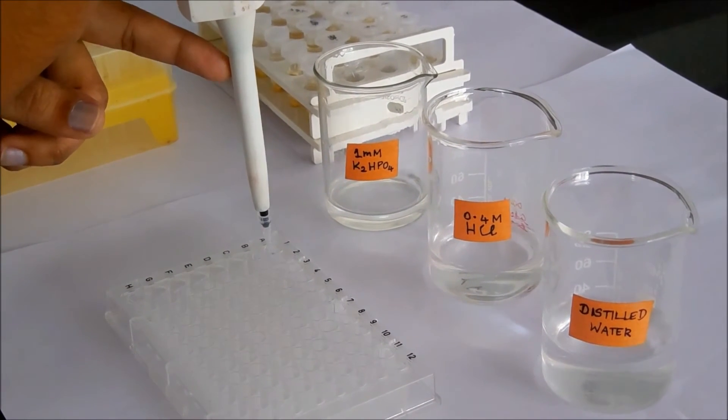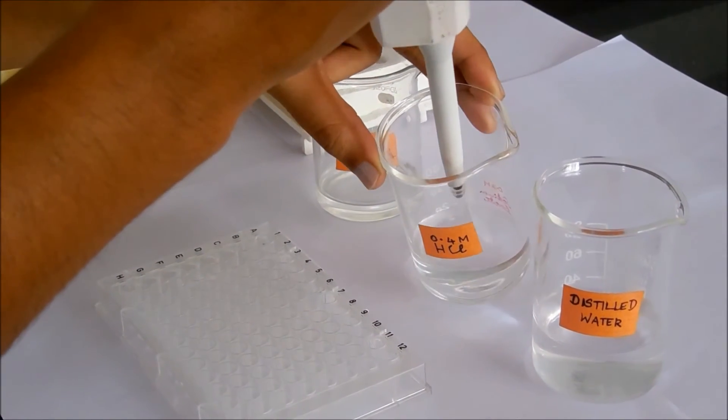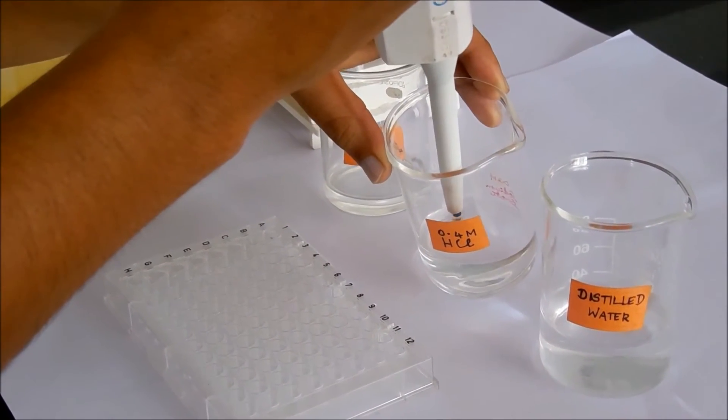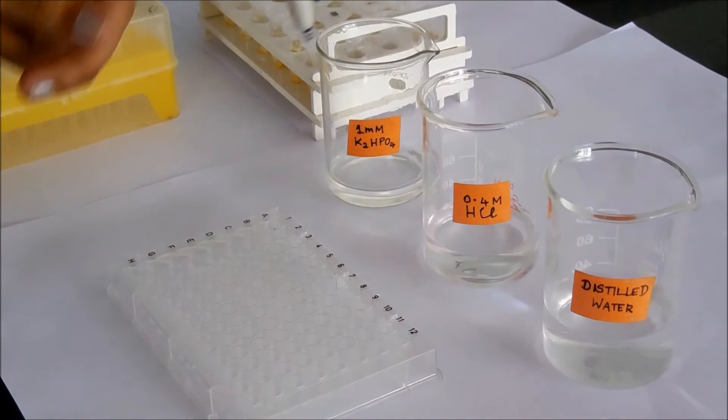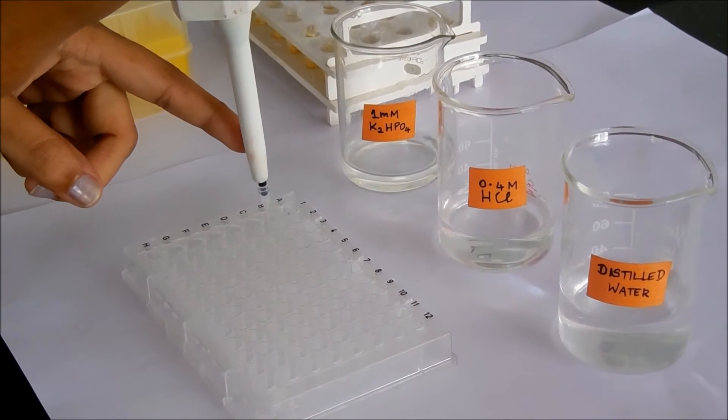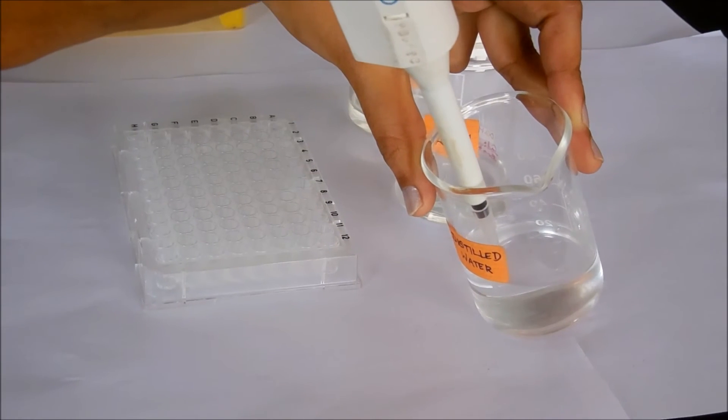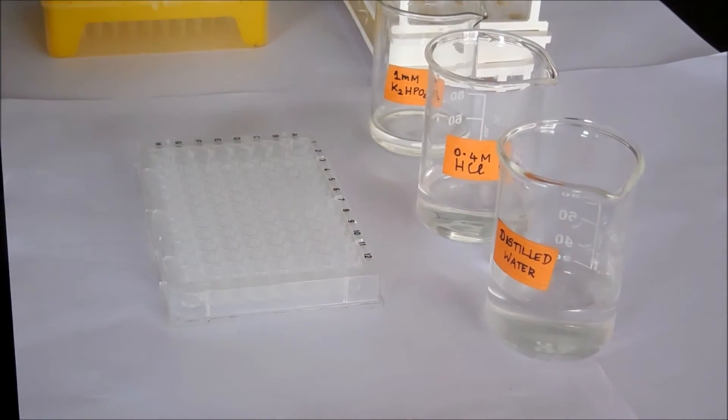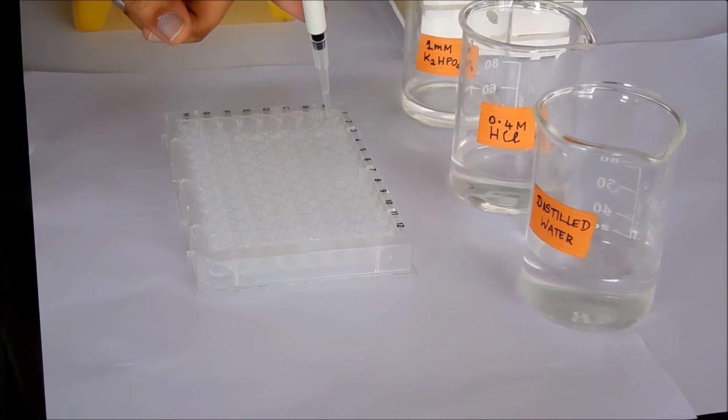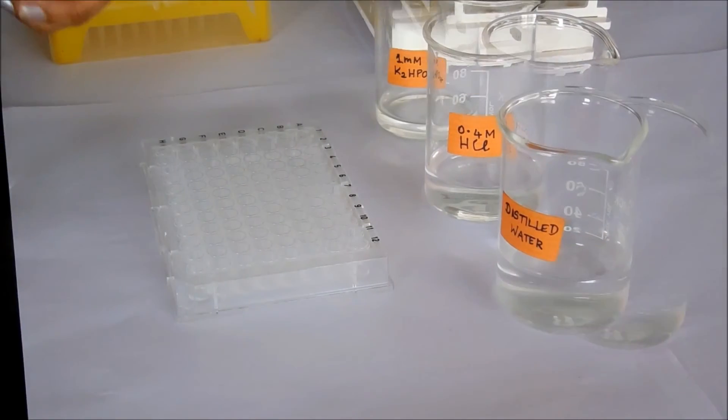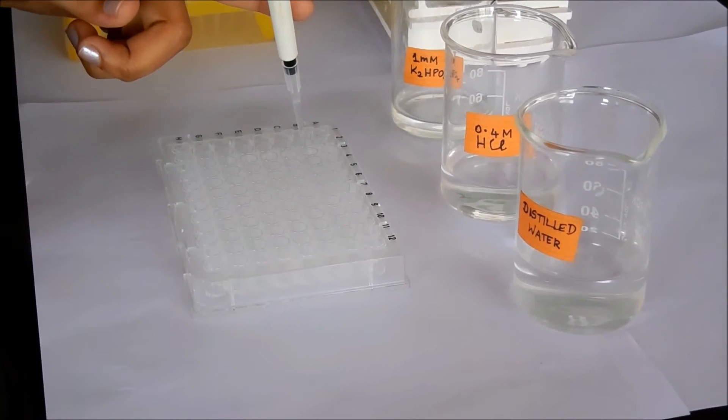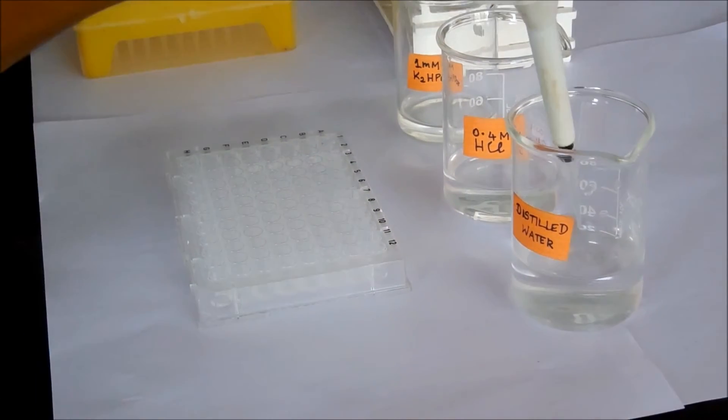Then add 10 µL of 0.4 molar hydrochloric acid to each concentration of the standard. Add distilled water to make up the total volume to 100 µL in each well.